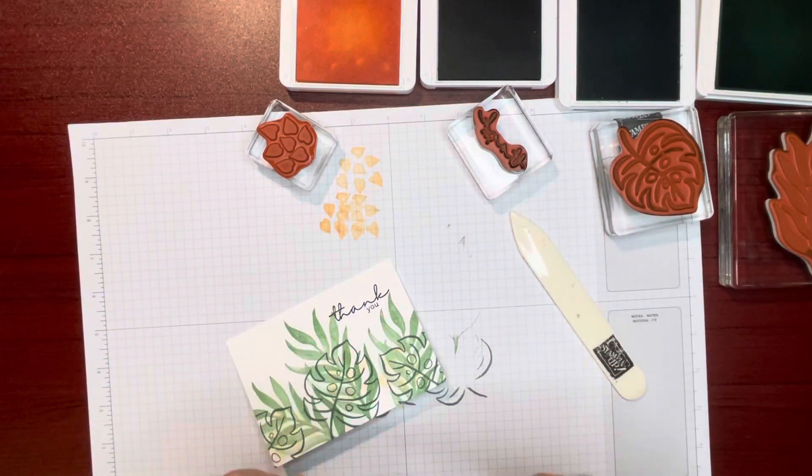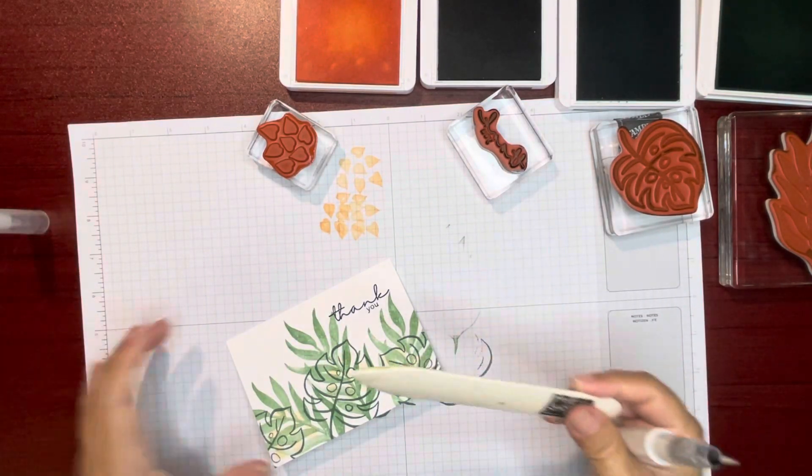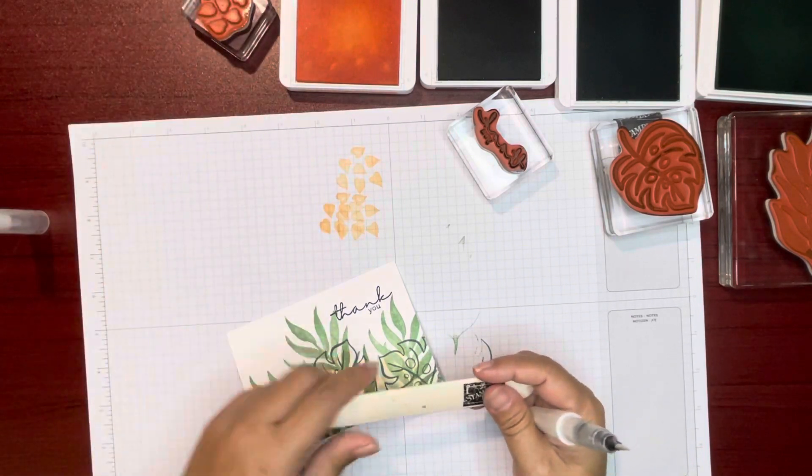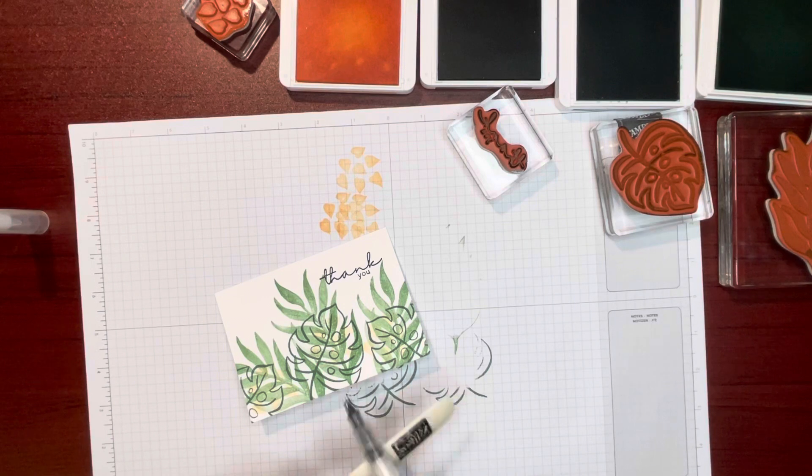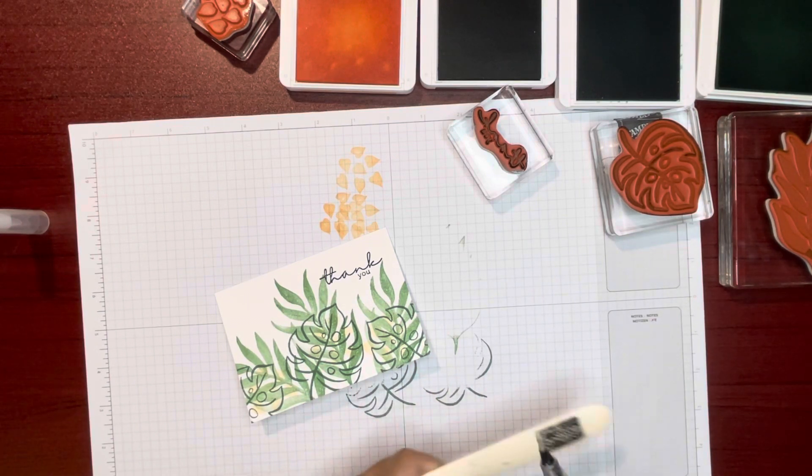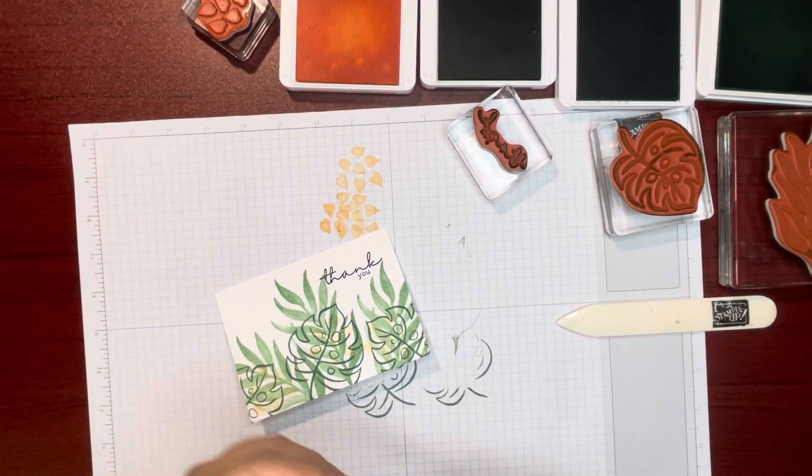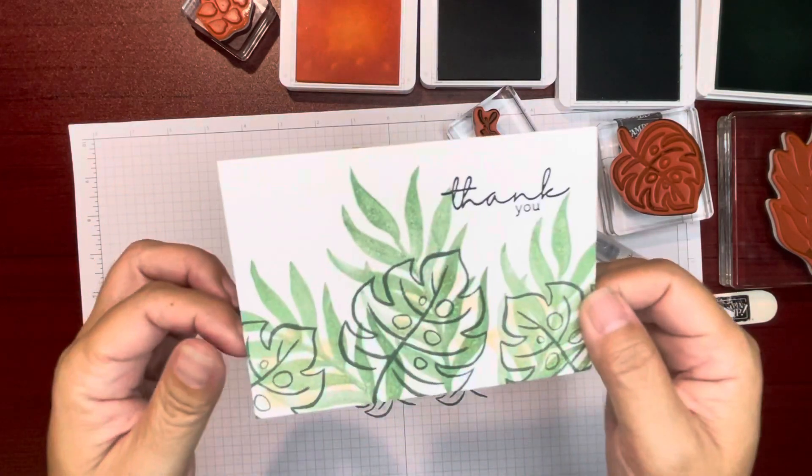And then I have the Wink of Stella brush and I'm gonna take my bone folder and I'm just gonna whack whack whack. This Wink of Stella glitter is gonna go ahead and sparkle up all this card.